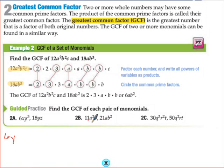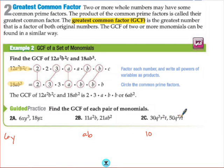For 11 and 21, there is no constant they have in common. This one has a², that one has a, so the shared variable is a. Then b and b² share b. So the GCF is ab. For 30 and 50, the largest number that goes into both is 10. Then q³ and q², so q² is the greatest they have in common. R and r² share r, and t and t — they both have t. So there are your answers for those three practice problems.